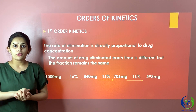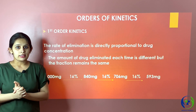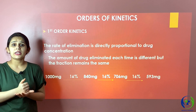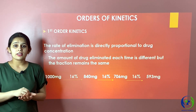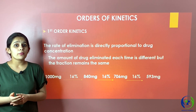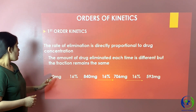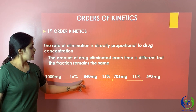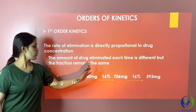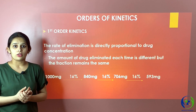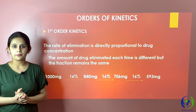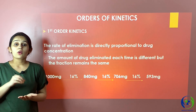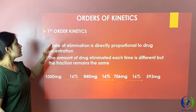Drugs follow a certain order of kinetics while being eliminated from the body: first order kinetics or zero order kinetics. In first order kinetics, when the drug is given in a proper dosage, elimination is directly proportional to the concentration of the drug. For example, if 1000 mg is given, 16% is eliminated, leaving 840 mg; then 16% of 840 mg is eliminated, and so on. The fraction of elimination always remains constant — it is the fraction, not the amount, that is constant.